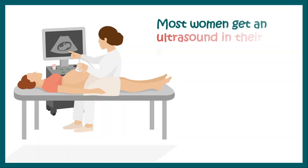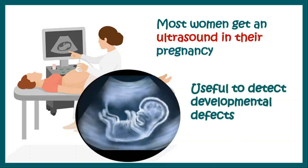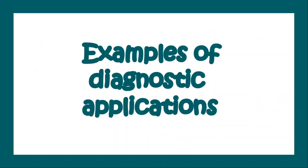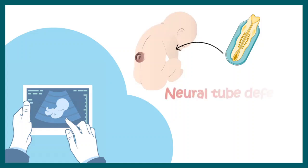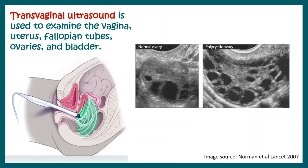Ultrasonography is done in most women during their pregnancy. This imaging technique is useful to detect developmental defects. For example, ultrasonography is used to detect neural tube defects such as spina bifida during pregnancy. Transvaginal ultrasounds can also be used to examine the vagina, uterus, fallopian tubes, ovaries, and urinary bladder, and is very routinely done by gynaecologists.